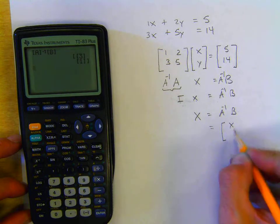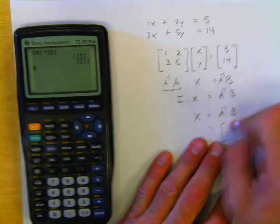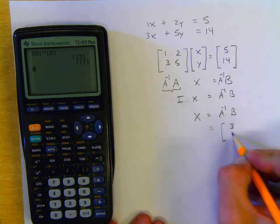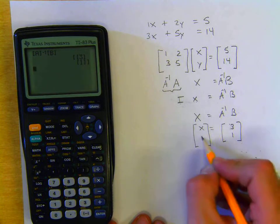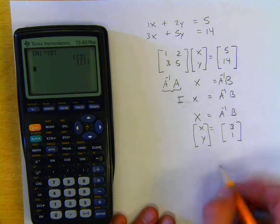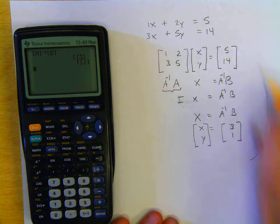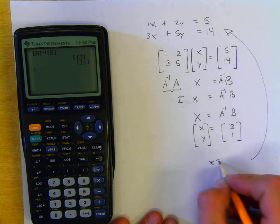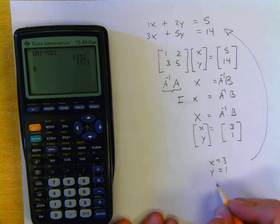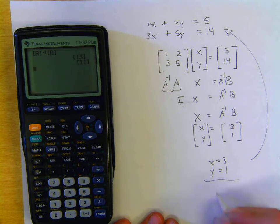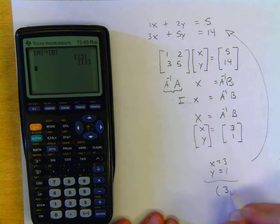And the values are 3 and 1. And our matrix X represents x and y. So we can determine then that the solution to this system of equations is x equals 3, y equals 1.